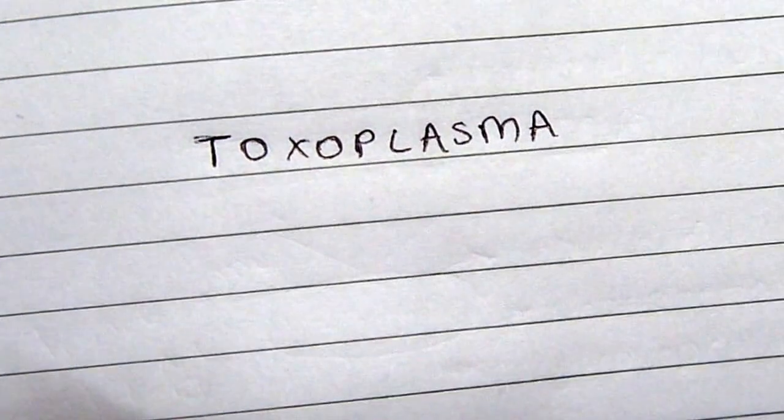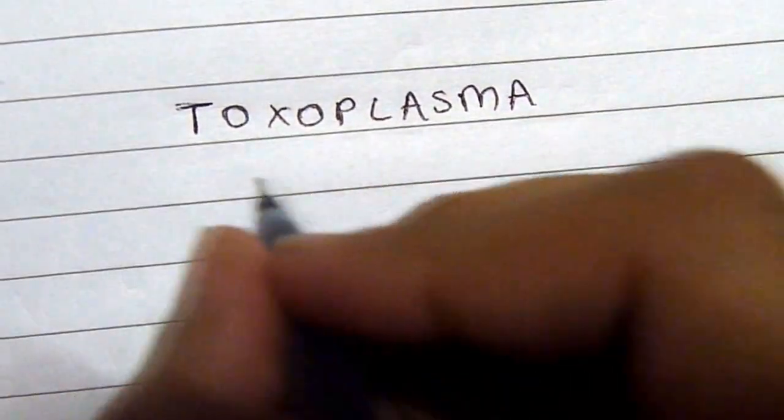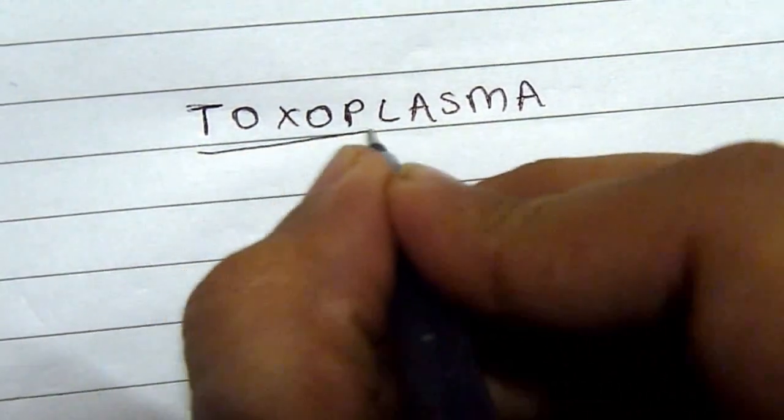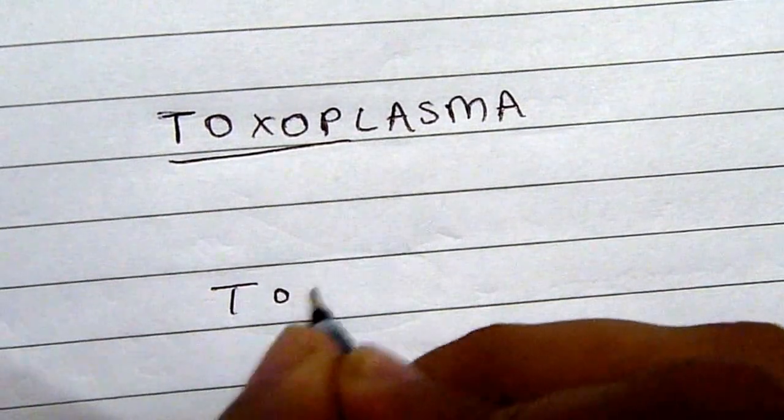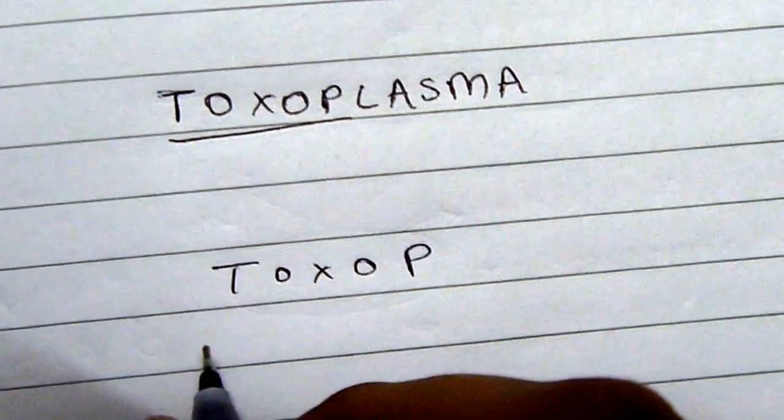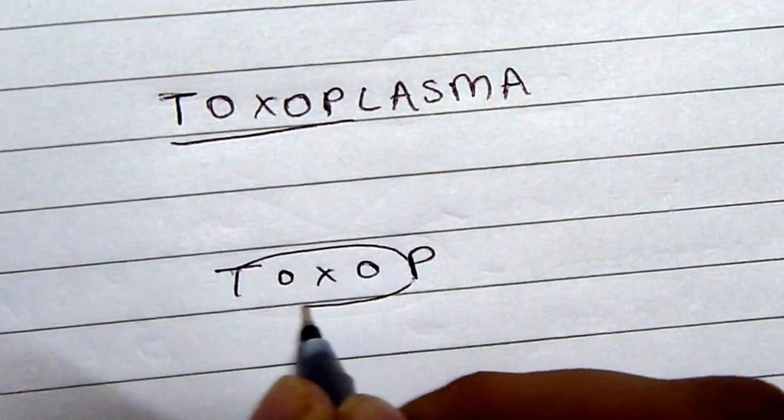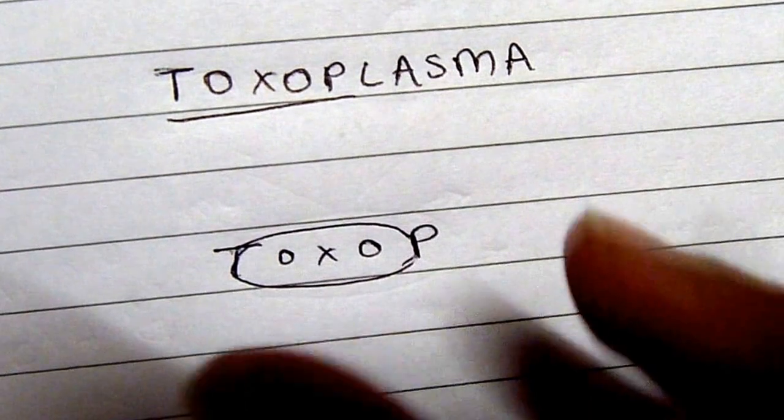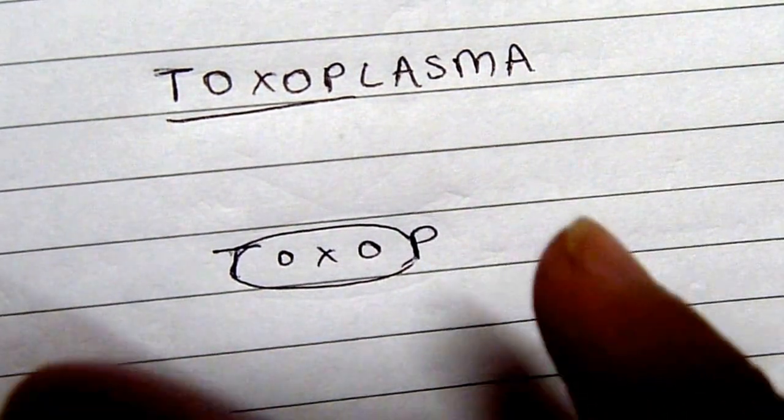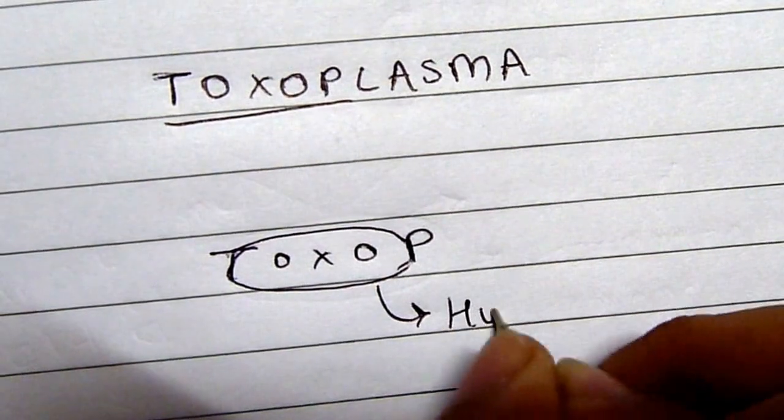chorioretinitis, and intracranial calcifications. The way I remember this is I draw out the starting letters of toxoplasma, and then I connect the T and the P. Once you connect them, it looks like a head, and the head looks kind of elongated, which reminds you of hydrocephalus.